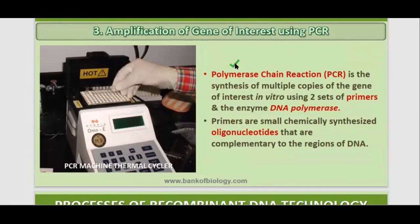Next is amplification of the gene of interest using PCR. Polymerase chain reaction is the synthesis of multiple copies of the gene of interest in vitro using two sets of primers and the enzyme DNA polymerase. Primers are small, chemically synthesized oligonucleotides that are complementary to the regions of the DNA.